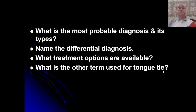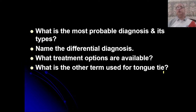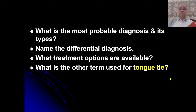The questions asked are: what is the most probable diagnosis and its types; name the differential diagnosis; what treatment options are available; and what is the other term used for tongue tie. The first three questions are related to this short essay question, while the fourth is a theoretical question not directly related to this scenario.